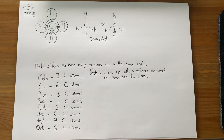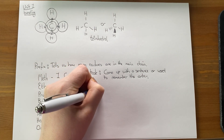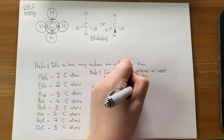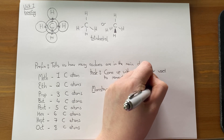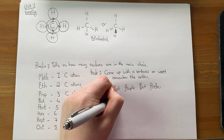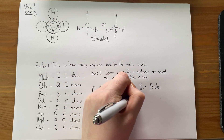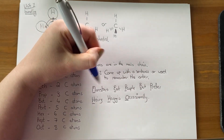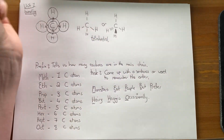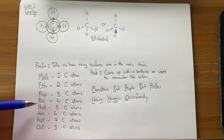You might have done something like this when you learned about the rainbow — 'Richard of York Gave Battle In Vain,' or Roy G Biv. I've got one to demonstrate what to do, but I'd like you to try and come up with your own. The one I like is: 'Monsters Eat People But Prefer Haiti Haggis Occasionally' — M, E, P, B, P, H, H, O — meth, eth, prop, but, pent, hex, hept, oct. That's one way to remember the order of your prefixes.